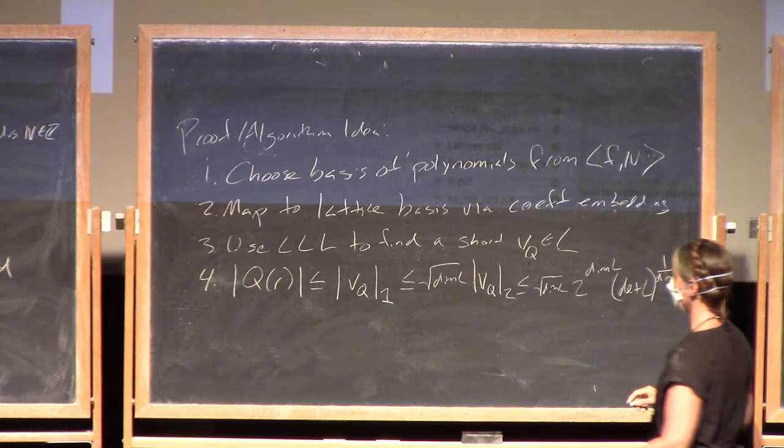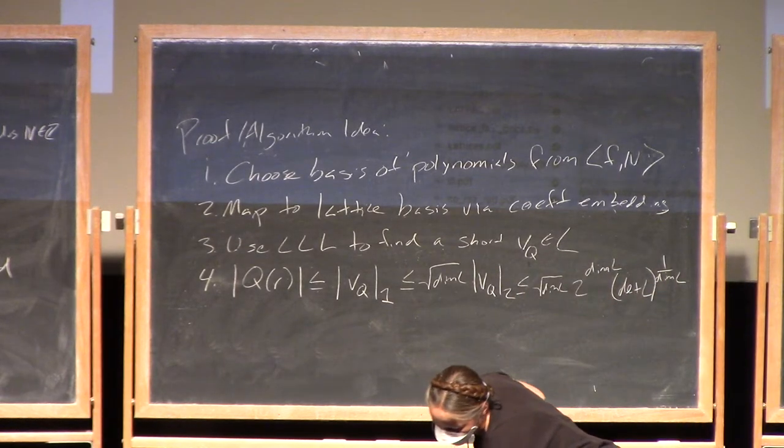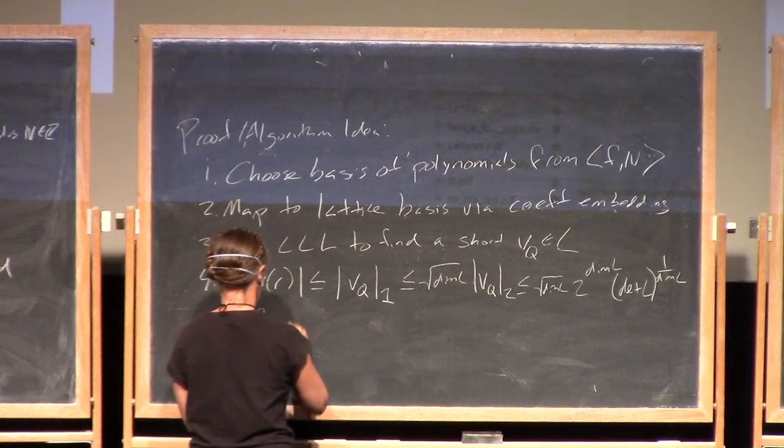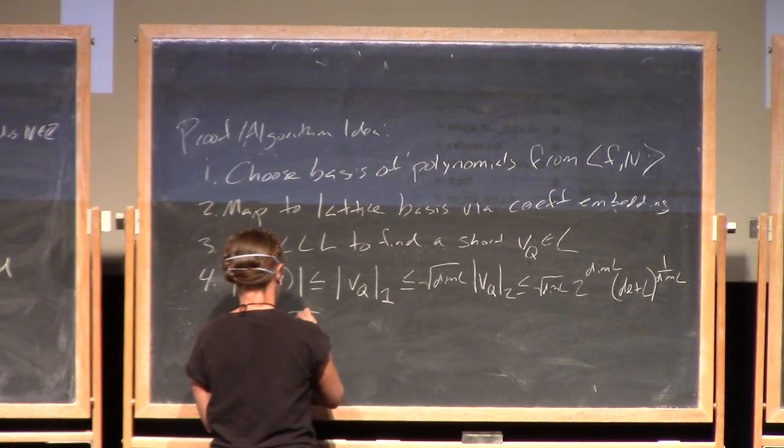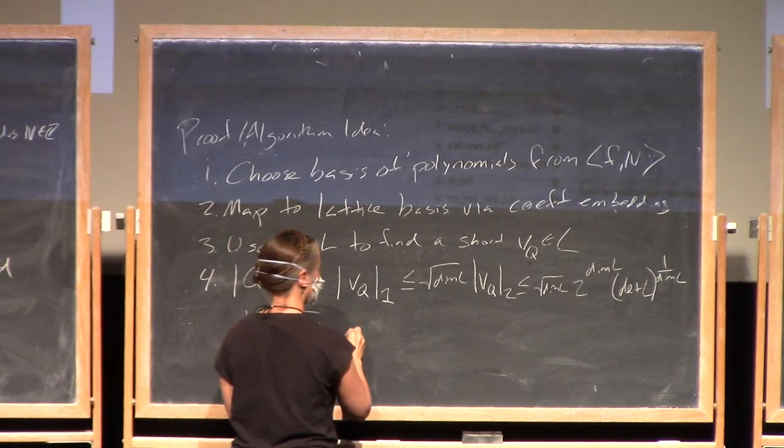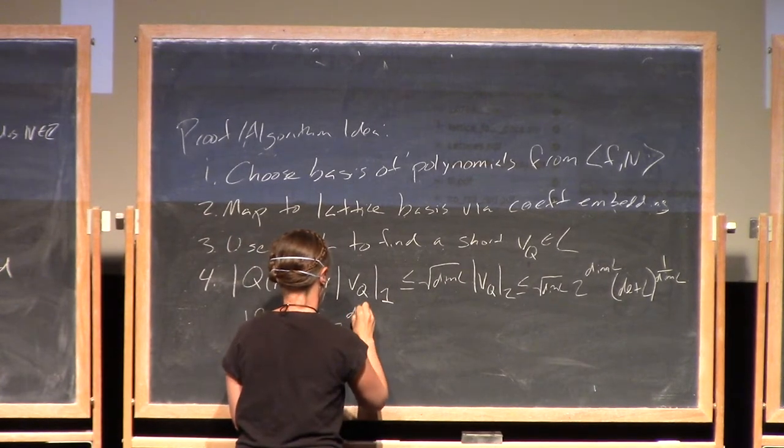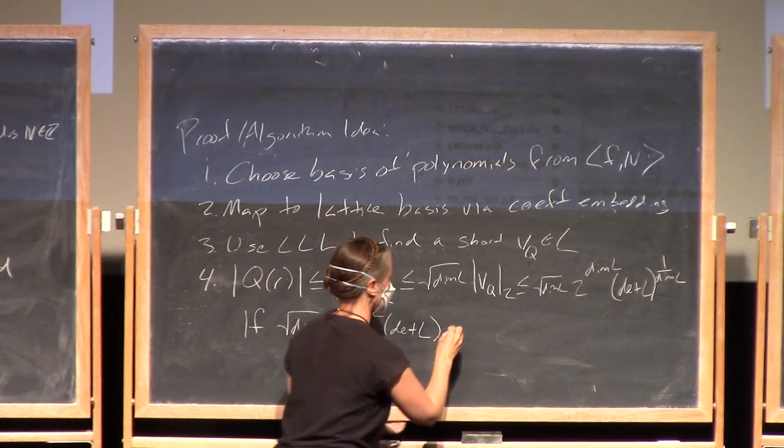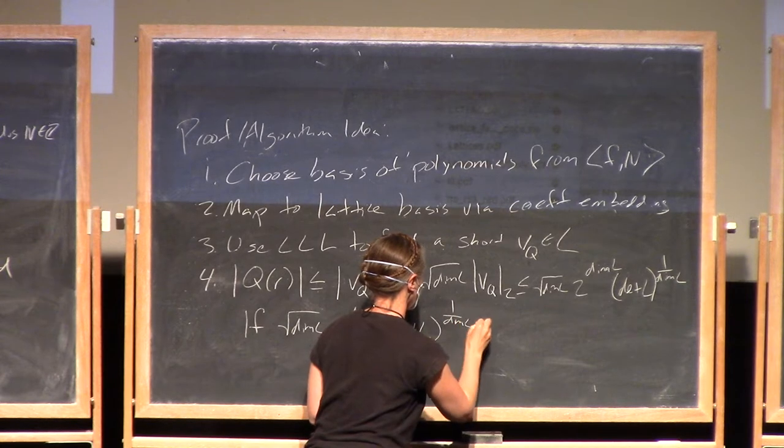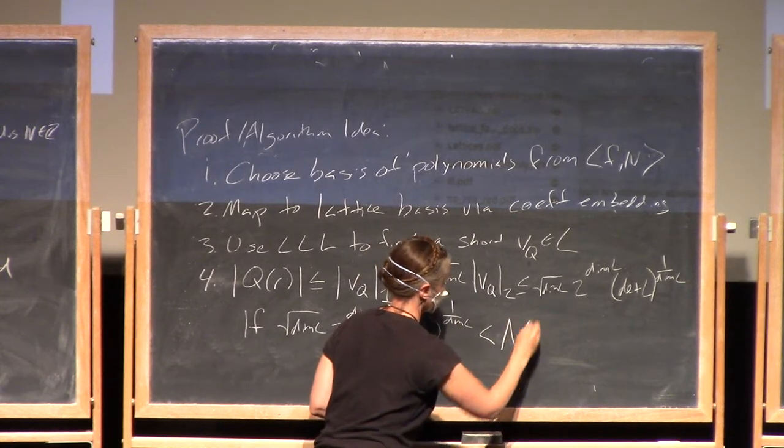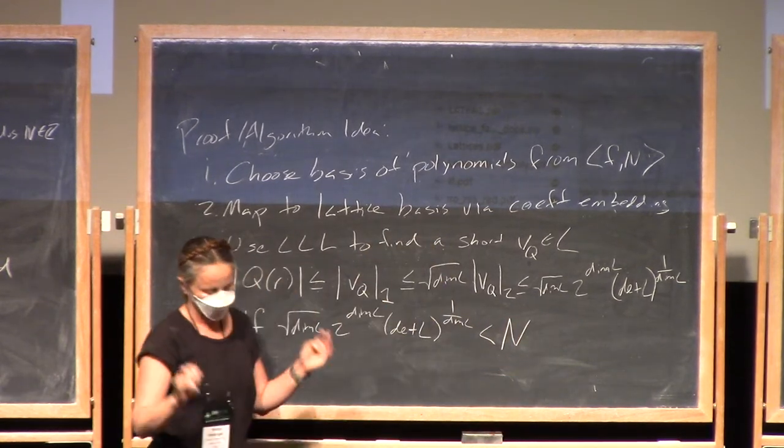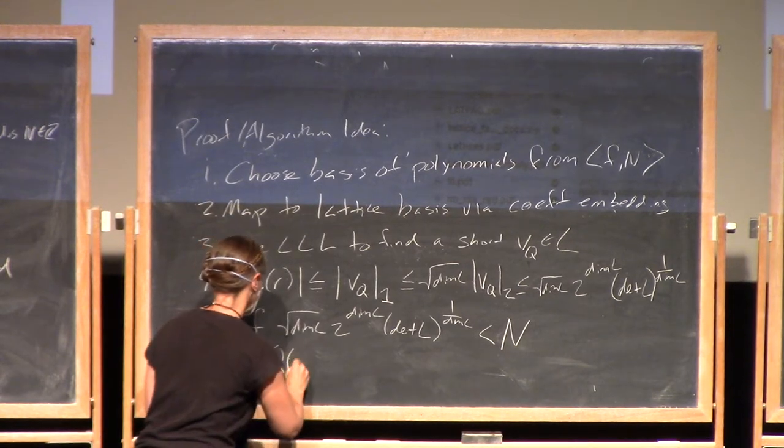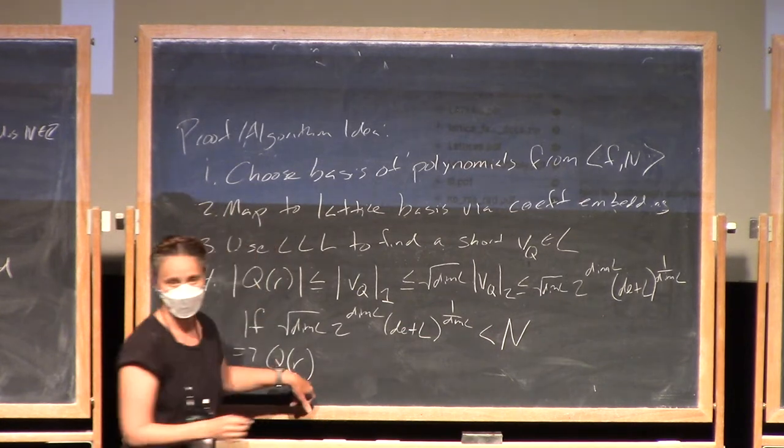And so if square root of dimension 2 to the dimension determinant to the 1 over dimension, if that is strictly less than our modulus n, then we're done because then we've established that q evaluated at any of the roots that we're looking for is going to be 0 over the integers and then we just solve it.